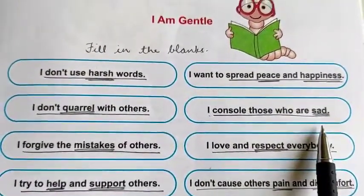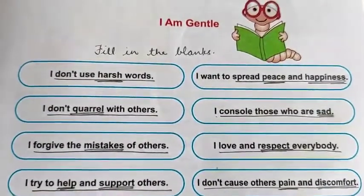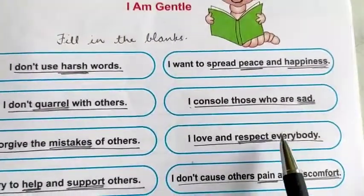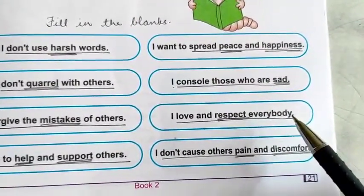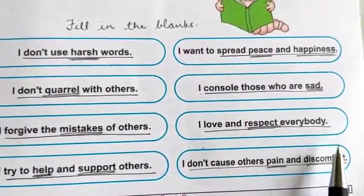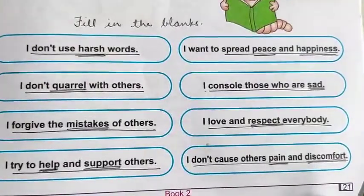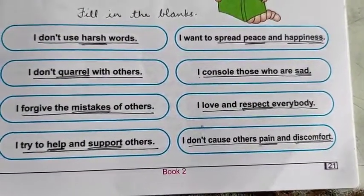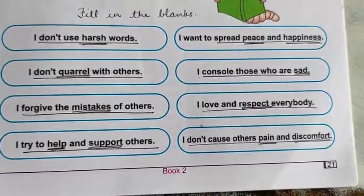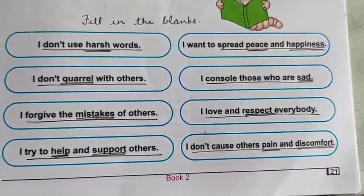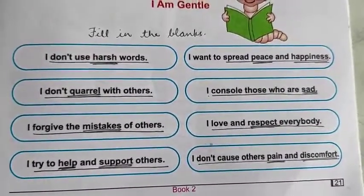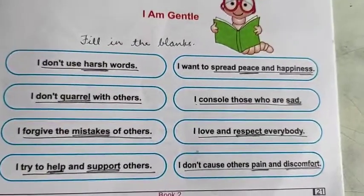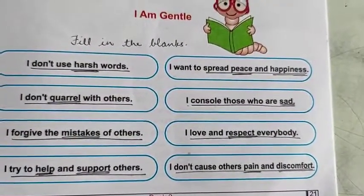I console those who are sad. A gentle person always tries to console someone who is sad and not feeling happy. Next: I love and respect everybody. A gentle person always loves others and gives respect to everyone, whether that person is younger or elder. You must have a younger brother and sister — if you are scolding and fighting with them every time just because you are elder, that is wrong. You should be gentle — love your younger siblings and give respect to your elders: your parents, grandparents, uncle, aunt, and friends. Give respect to everyone.